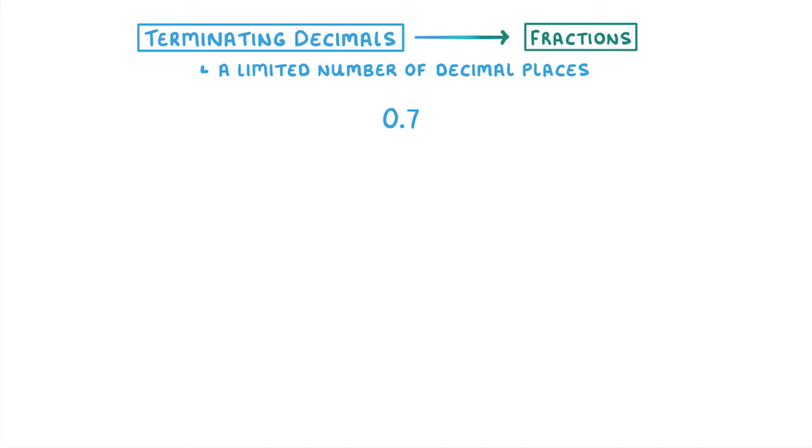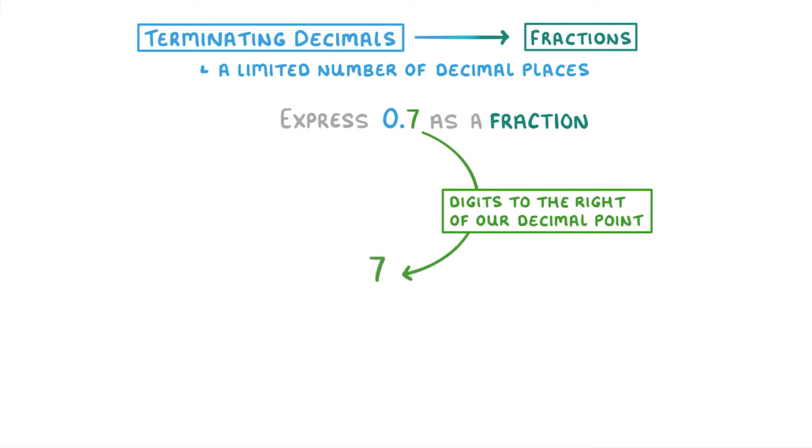To convert them into a fraction though, like if we were asked to express 0.7 as a fraction, there's a couple steps that we have to do. The first thing we have to do is take all the digits that are to the right of the decimal point, so 7 in this case, and make those digits the numerator of our fraction.